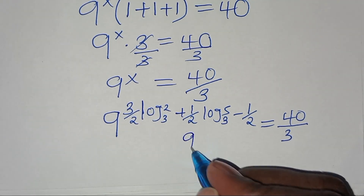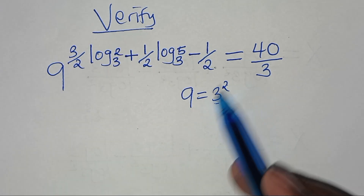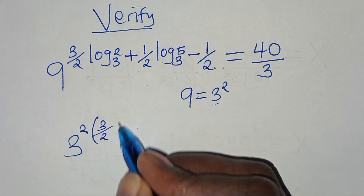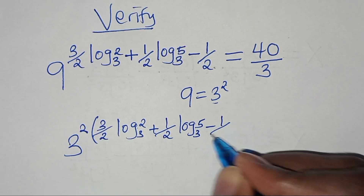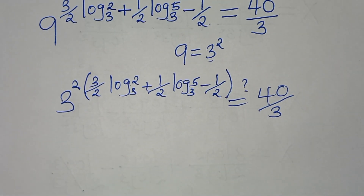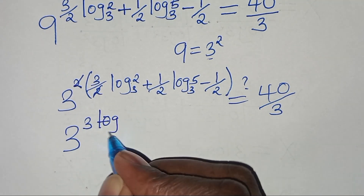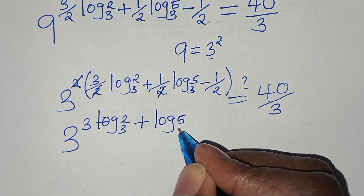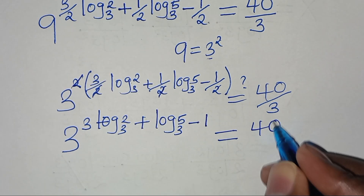We can express 9 as 3 to the power 2, so substituting: 3 to the power 2 multiplied by the exponent gives 3 to the power of 3 log₃ 2, plus log₃ 5, minus 1 — after simplifying the factors of 2. This is supposed to give us 40 over 3, so let's check if this is true.